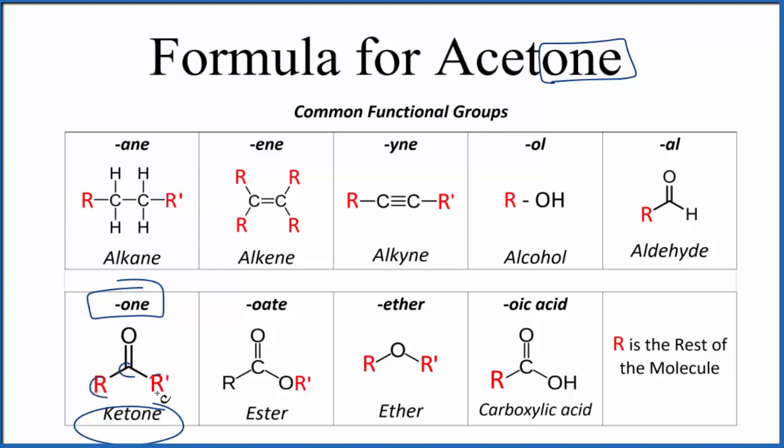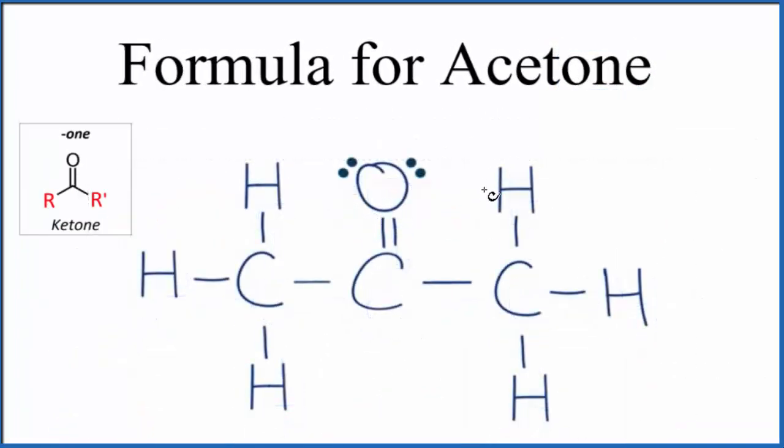On either side, we'll have carbons. So we could start out by just writing the structure for the simplest ketone. We'd put our carbon with our double bonded oxygen, and then we'll put a carbon on either side. So this is the simplest ketone, and it turns out this is actually acetone.